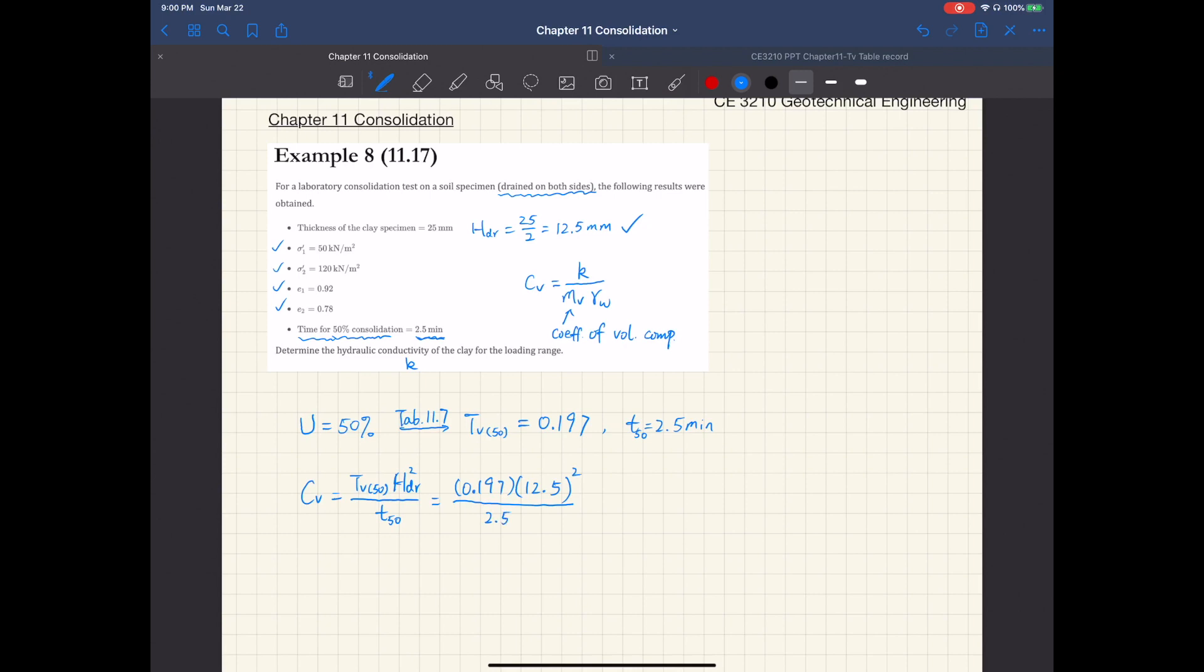And we're going to convert this into meter squared per minute. So 12.5 is divided by 100 to convert it to meters. So it's 0.197, 0.025 meters divided by—meter squared divided by 2.5 minutes.